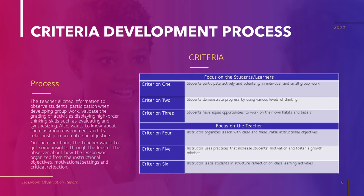Criteria number 1: Students participate actively and voluntarily in individual and small group work. Criteria number 2: Students demonstrate progress by using various levels of thinking. Criteria number 3: Students have equal opportunities to work on their own habits and beliefs. Criteria number 4: Instructor organizes lessons with clear and measurable instructional objectives. Criteria number 5: Instructor uses practices that increase students' motivation and foster a growth mindset. Criteria number 6: Instructor leads students in structured reflection on class learning activities.